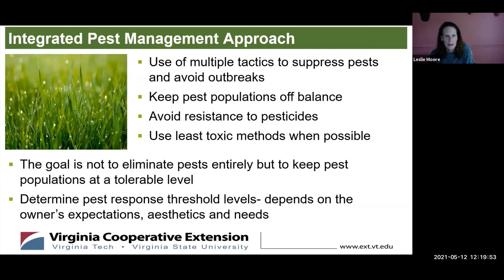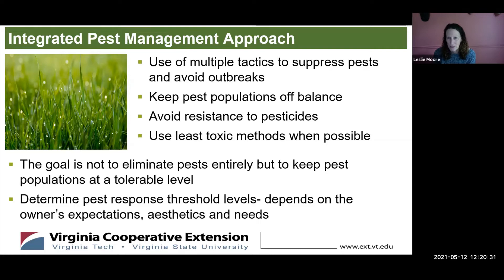Master gardeners like to approach any kind of pest management with what's called an Integrated Pest Management approach. This is the use of multiple tactics to suppress pests and avoid outbreaks. Our goal isn't really to eliminate all bugs or all weeds — it's to keep them at a minimum and keep them off balance so they don't take over your yard. We want to avoid heavy pesticide use when possible because you can build resistance to them and there are other effects on the environment. We want to keep your plants strong, outgrow the weeds, and make it uncomfortable for pests to populate your yard.